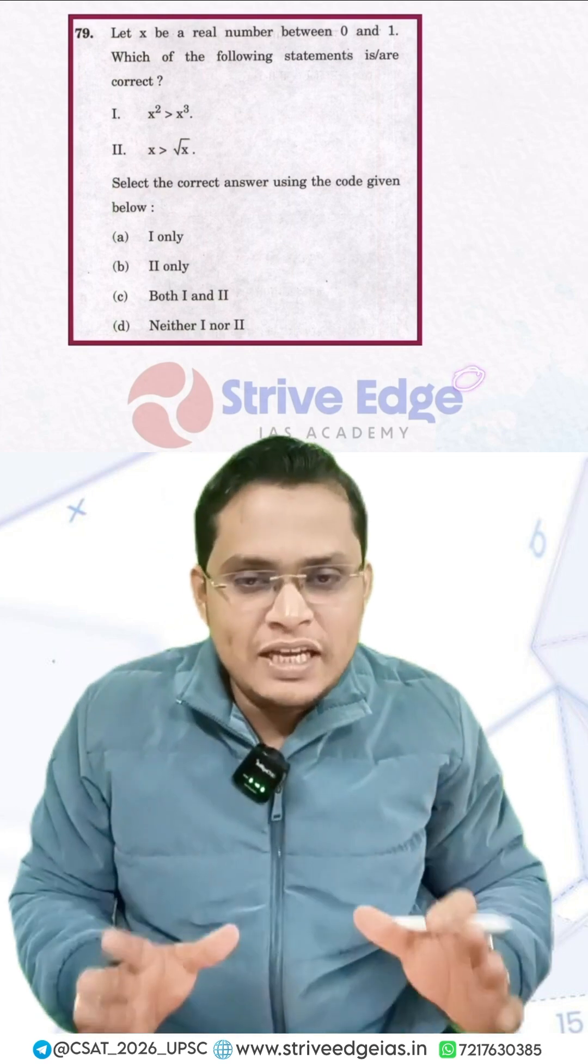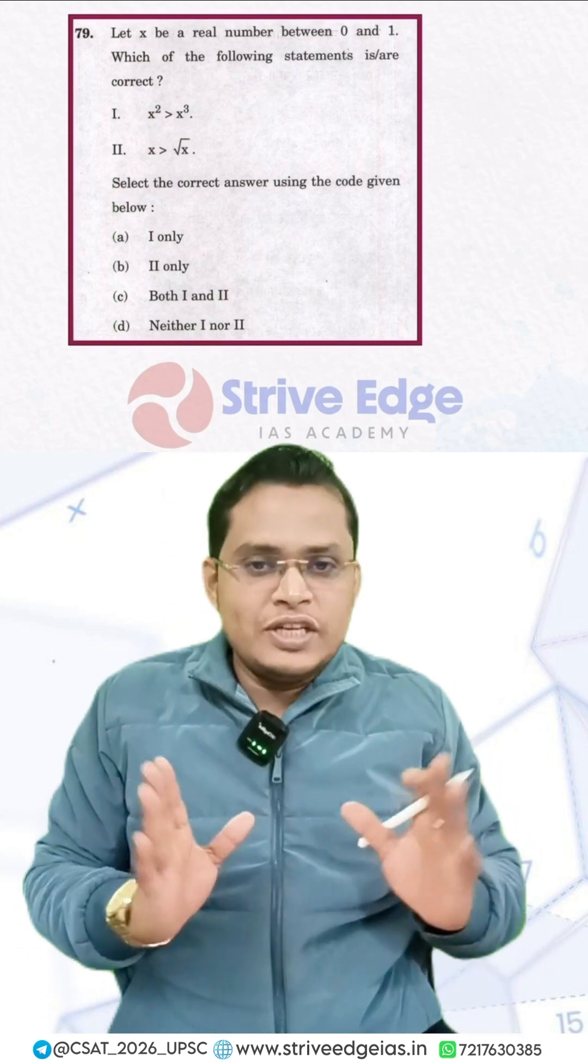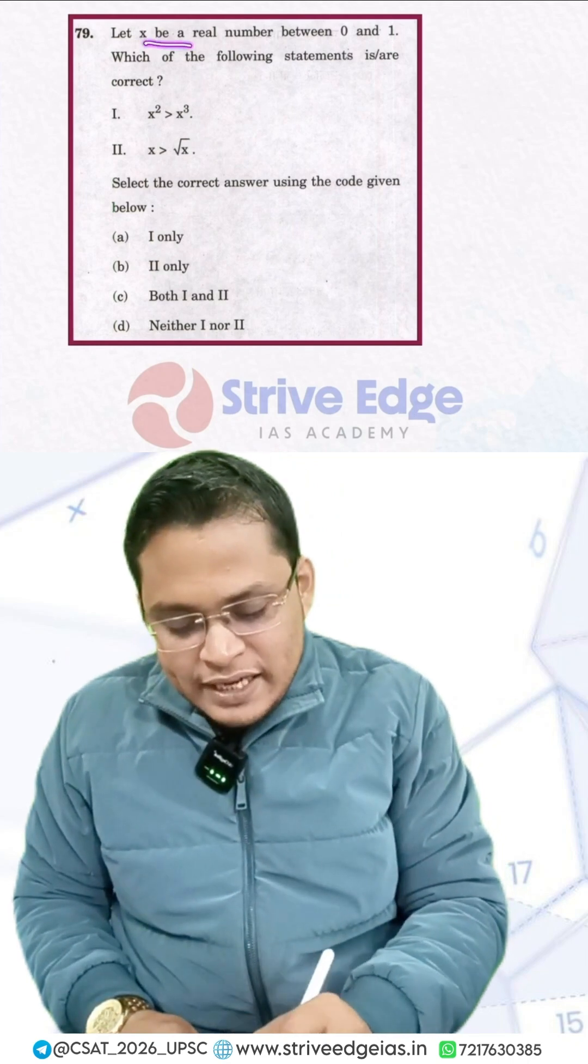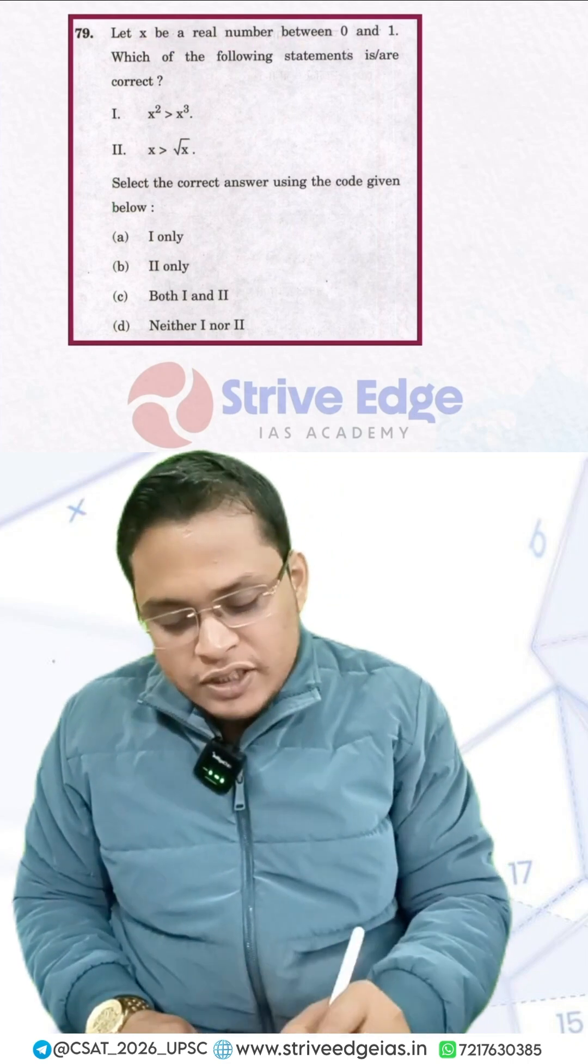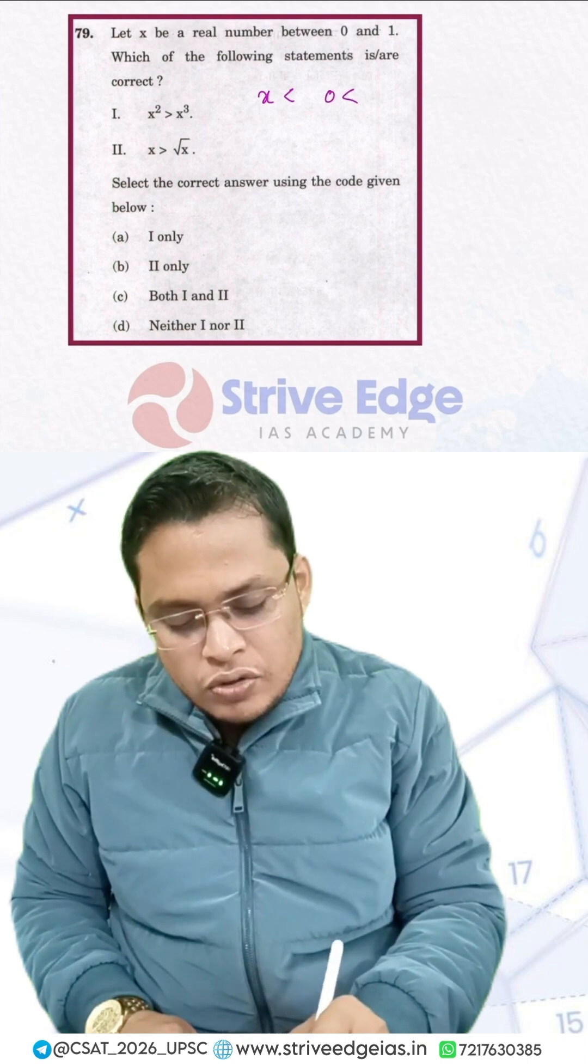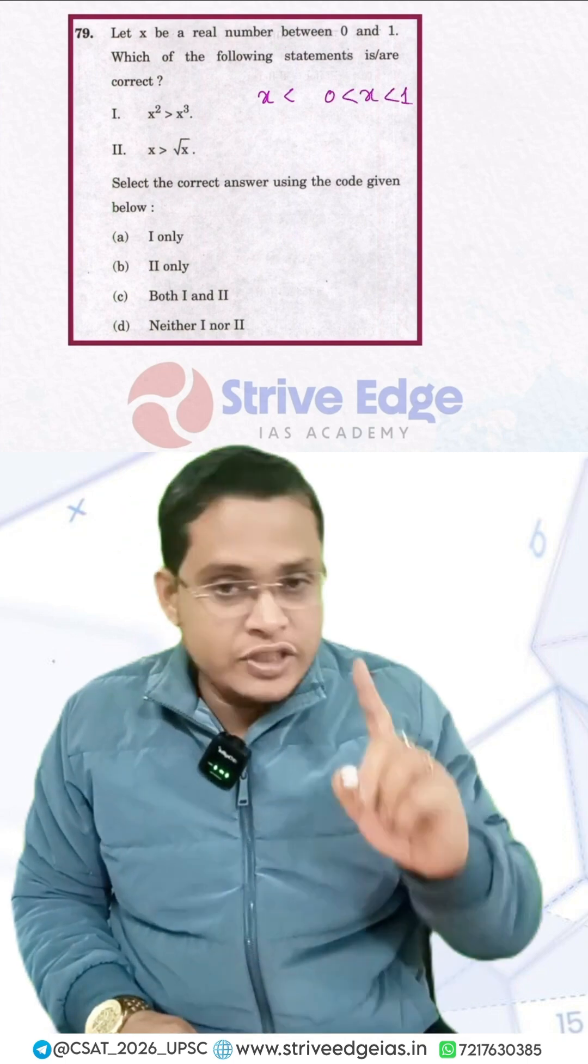Dear student, this is one of the easiest questions asked in your UPSC 2025 CSAT question. So it is saying let x be a real number between 0 to 1. This is very important. So my x is between 0 to 1.